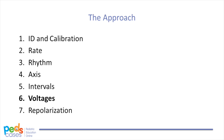In part one of the approach, we discussed the steps rate, rhythm, axis, and intervals, and we worked through a case of a four-week-old boy with a new grade 3 systolic murmur. It's recommended that you listen to part one prior to moving on to part two. In this podcast, we will discuss the last two steps of the approach, voltages and repolarization. Since this is a visual topic, we encourage you to view the corresponding video presentation available on the Peds Cases website.